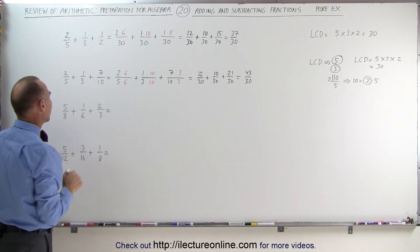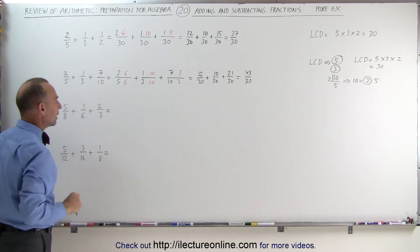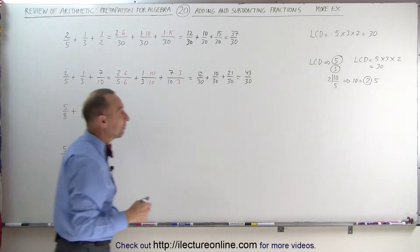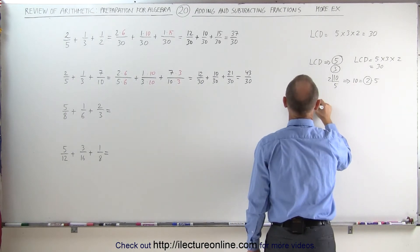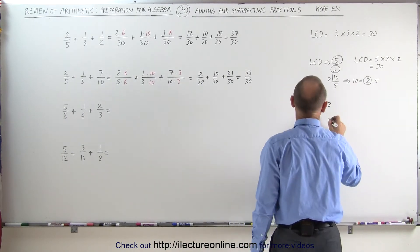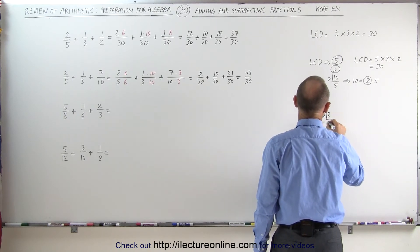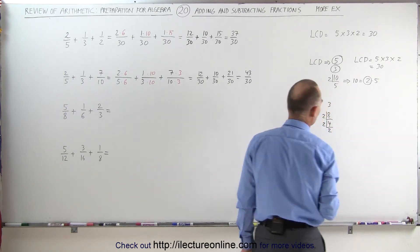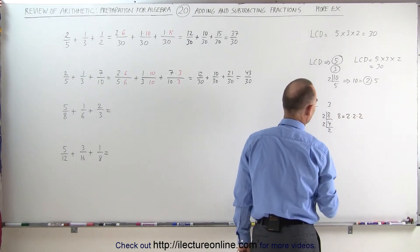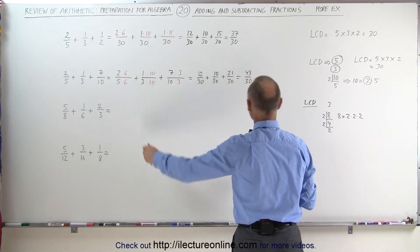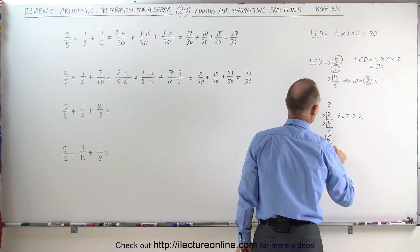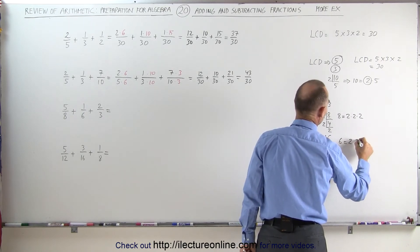Taking a look at the third example, we need to find the lowest common denominator by expressing each denominator as a product of their factors. The number 3 is a prime number, so we can't do anything with that. But the number 8 can be divided by 2 to give 4, divided by 2 to give 2, which means that 8 can be written as 2 times 2 times 2. The number 6 can be divided by 2 to get 3, so 6 can be written as 2 times 3.